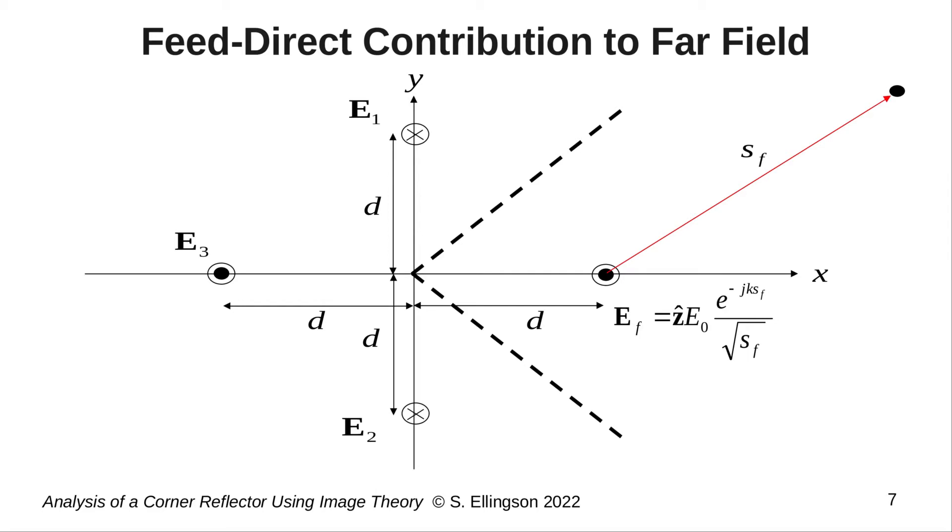Further, we can immediately write an expression for E sub f as shown here. E sub f will be, of course, oriented in the z-hat direction, that is, out of the page, and we'll have some complex valued coefficient E sub 0. Taking the distance from the feed to the field point to be S sub f, we'll have a phase factor e to the minus j k S sub f, where k is the phase propagation constant, 2 pi divided by wavelength. And then this gets divided by the square root of S sub f, which is the spread factor for a cylindrical wave.